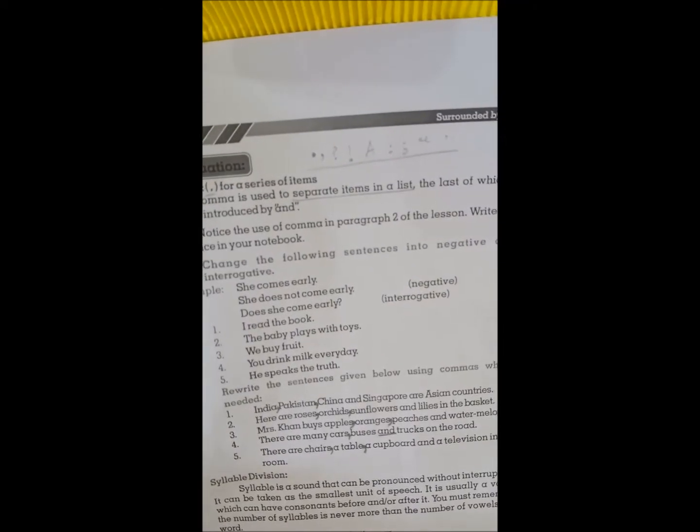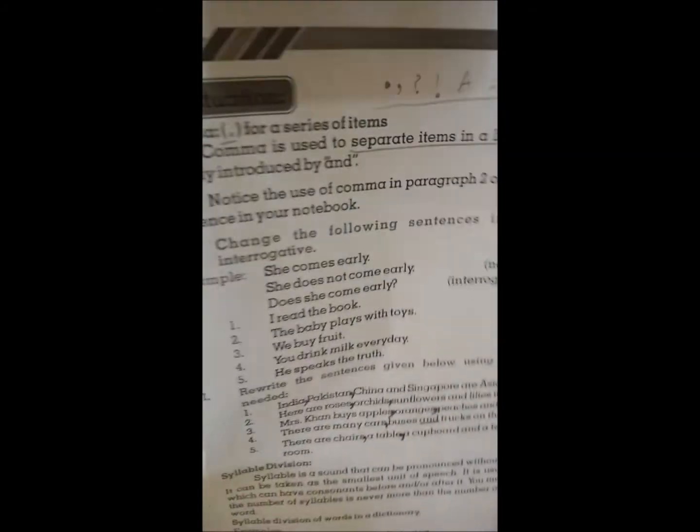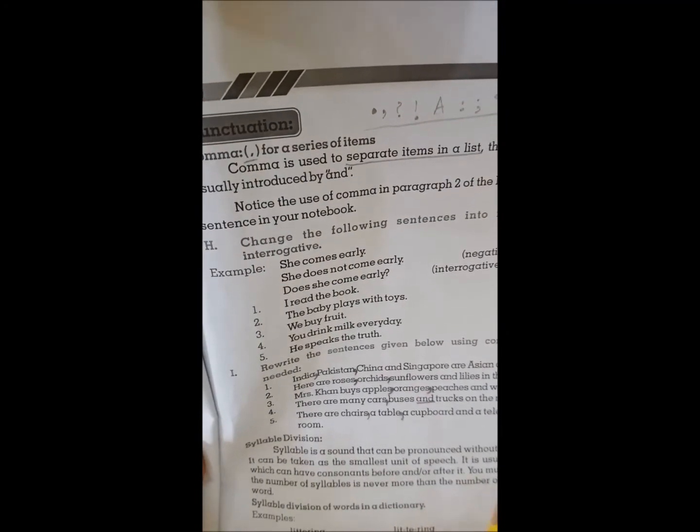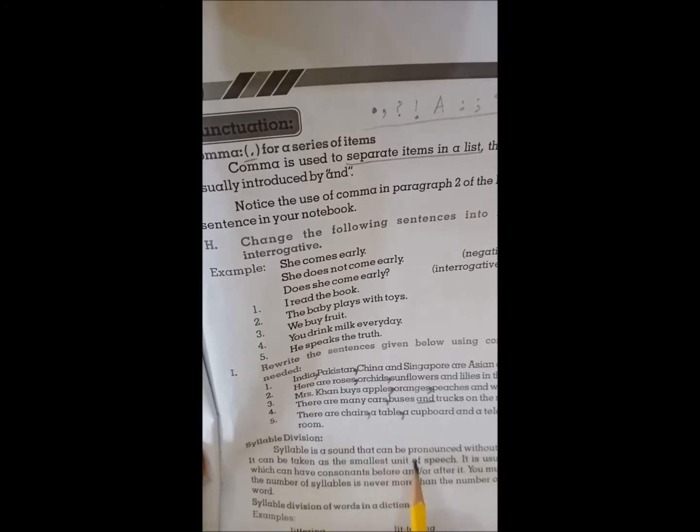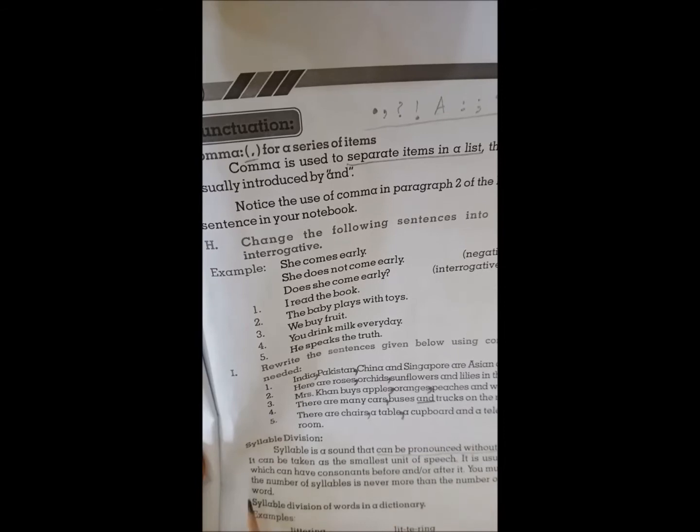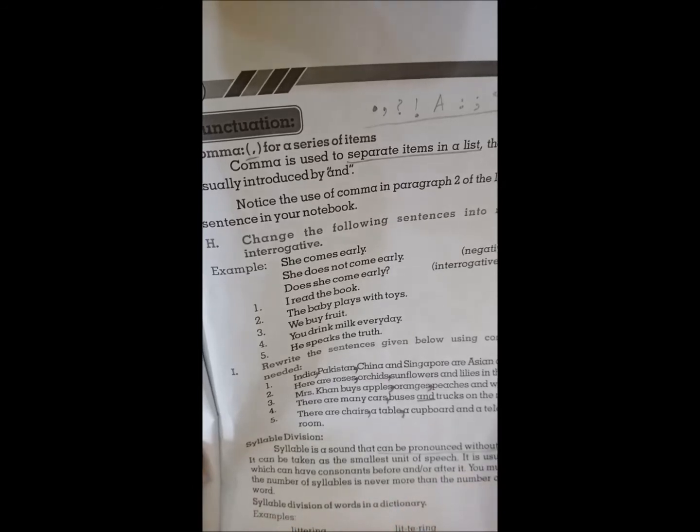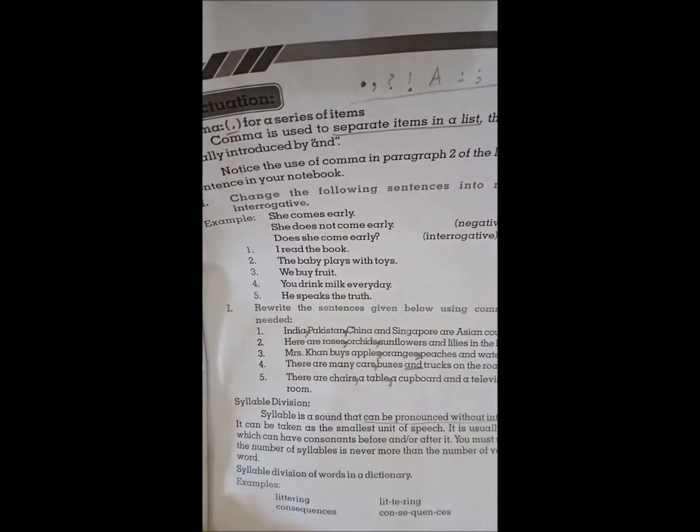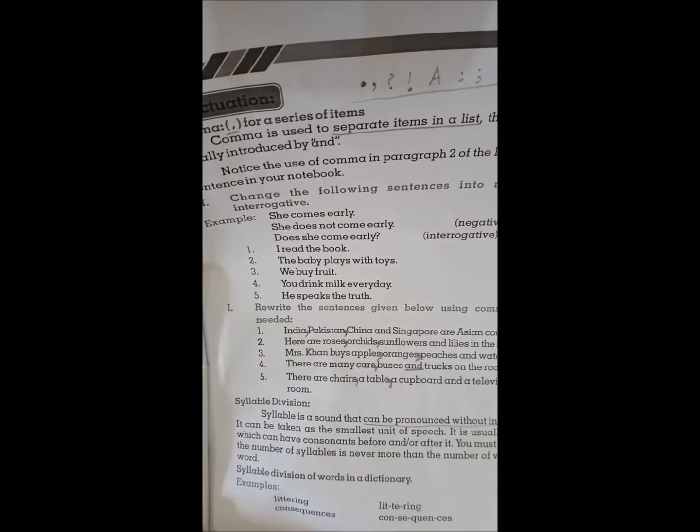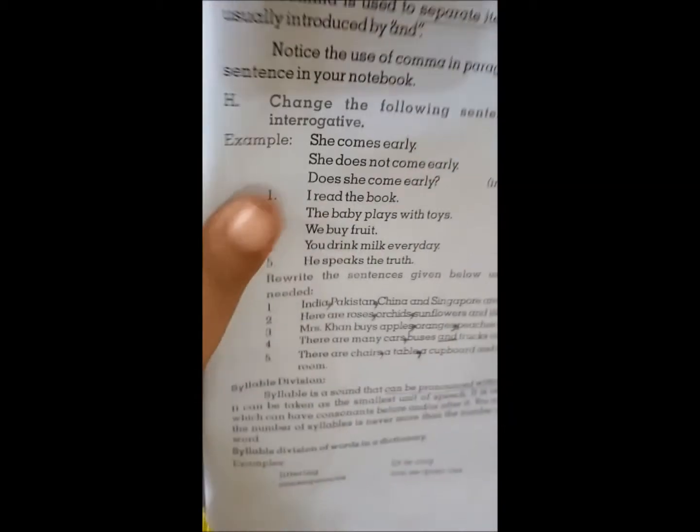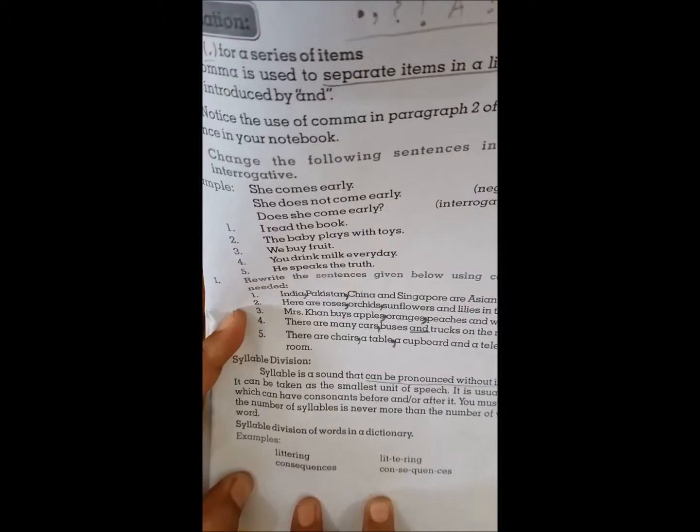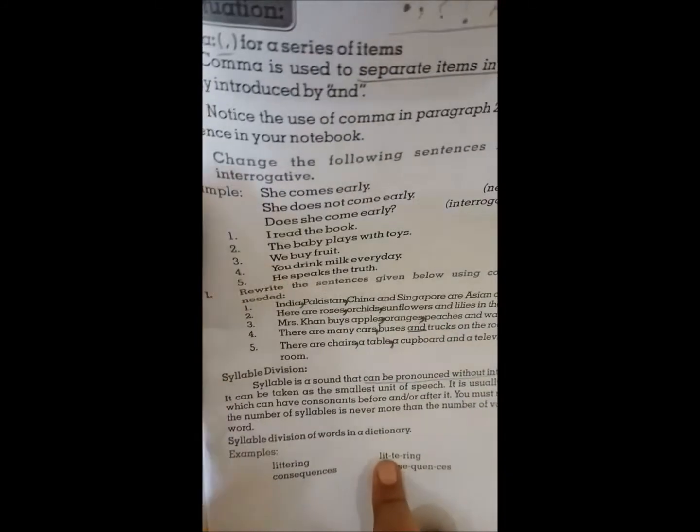Next is syllable. Syllable is a sound that can be pronounced without interruption. It can be taken as the smallest unit of speech. It is usually a vowel which can have consonants before and or after it. You must remember the number of syllables is never more than the number of vowels in a word.